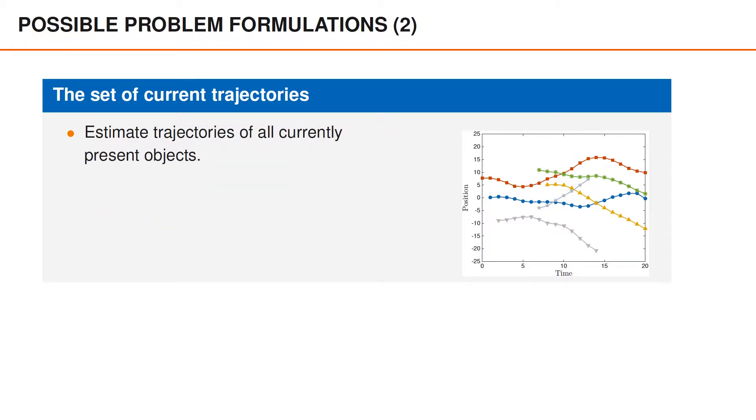In some applications, we really only care about the trajectories of the objects that are present right now. In the figure to the right, this would imply that we care about the trajectories of the four objects that are still present, whereas the two trajectories that ended before time 20 are greyed out and ignored. This problem formulation is important, for instance, in certain surveillance systems where we only care about the boats or people that are present right now. On the other hand, it is also easy to imagine that some surveillance systems also want information about, for instance, a person who dropped the bag at the entrance of the train station and left.